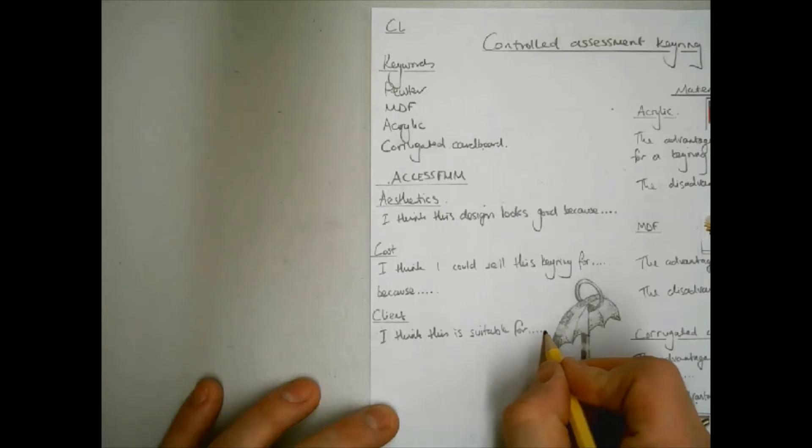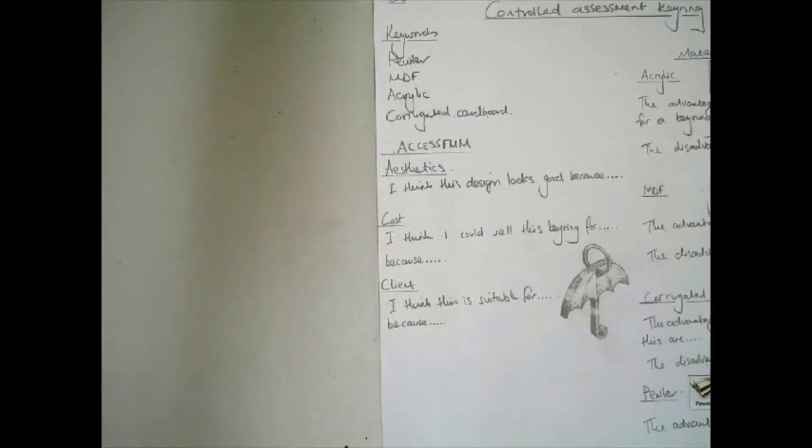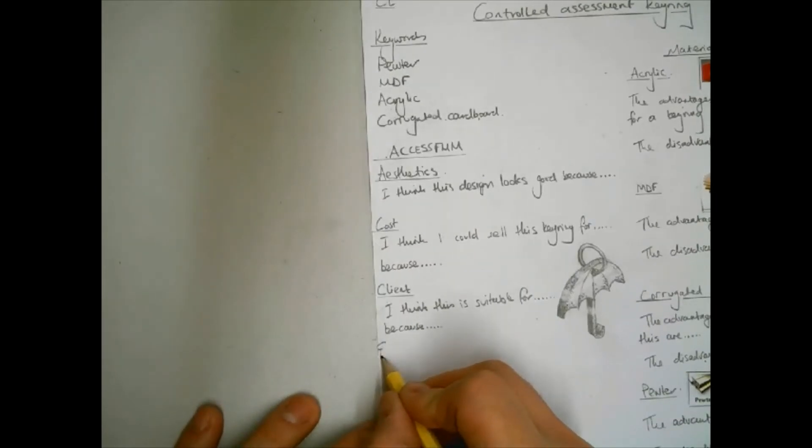An example of this would be I have chosen to paint the umbrella keyring multicoloured because my product is for boys and girls and these colours would suit both genders.